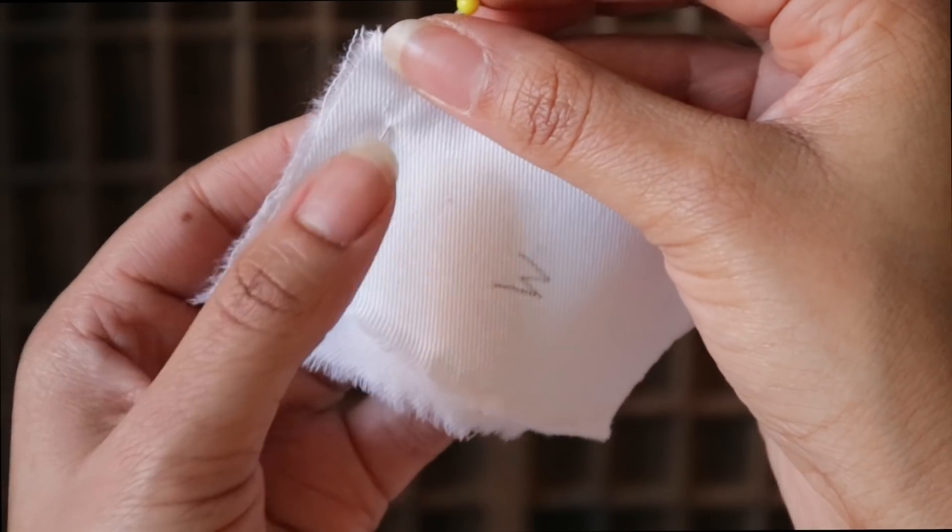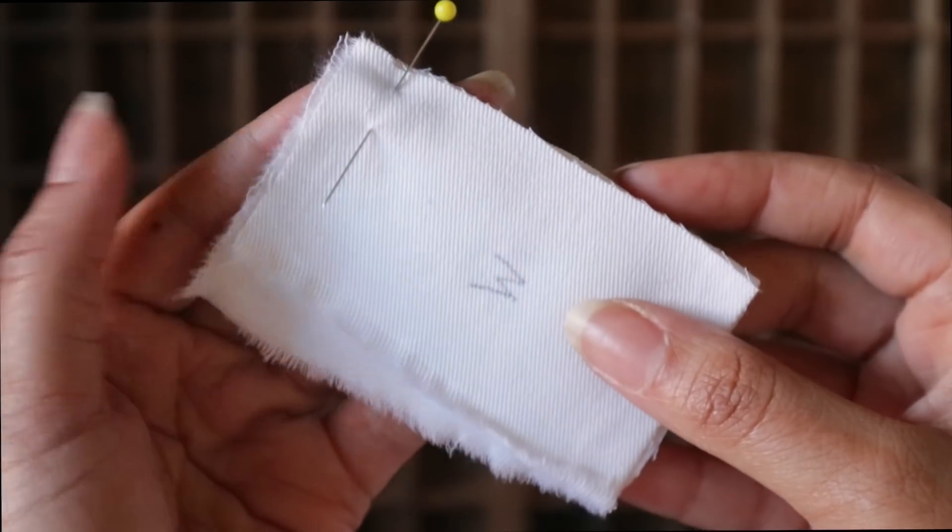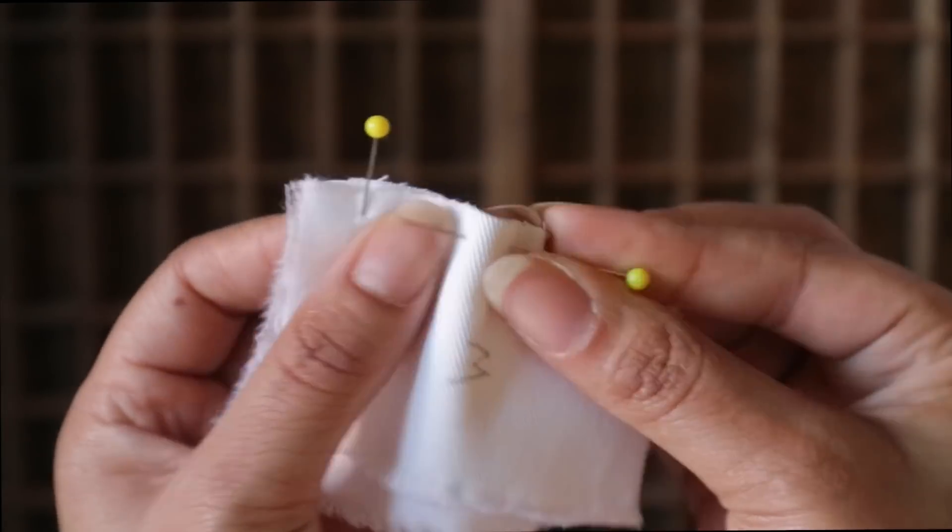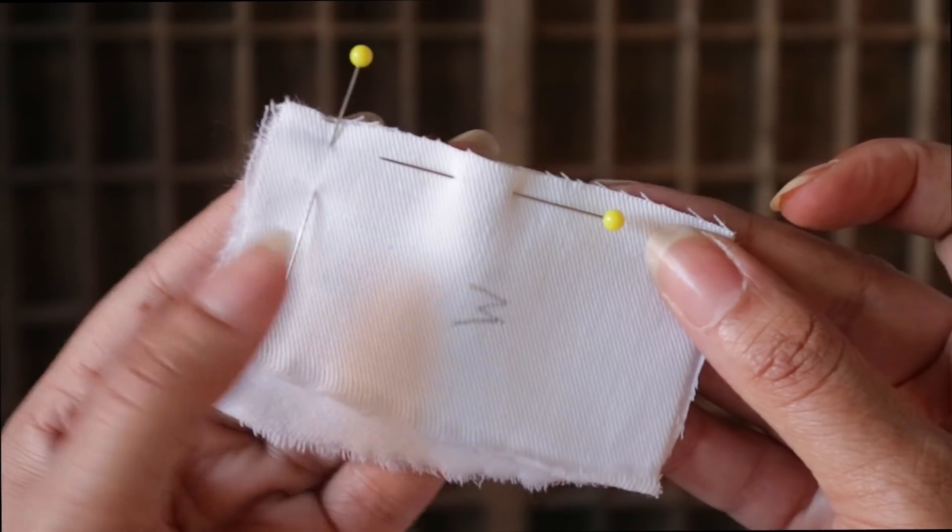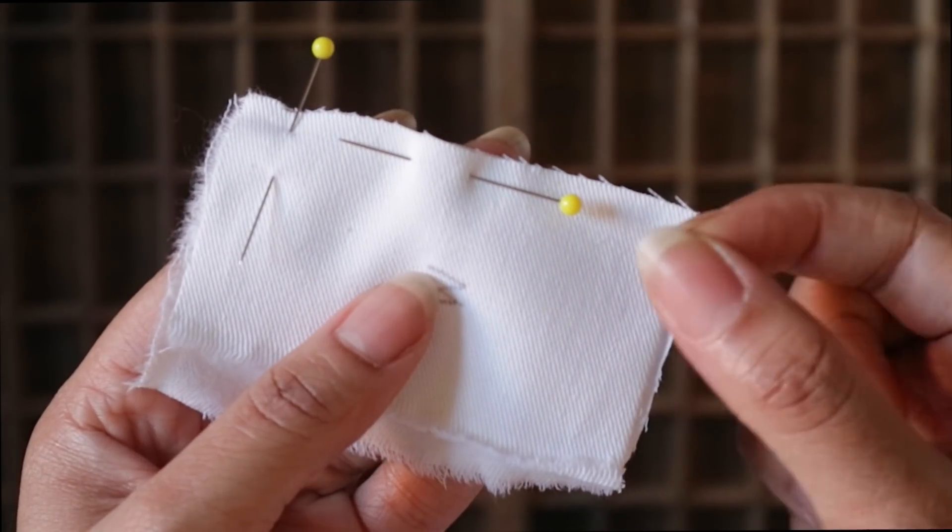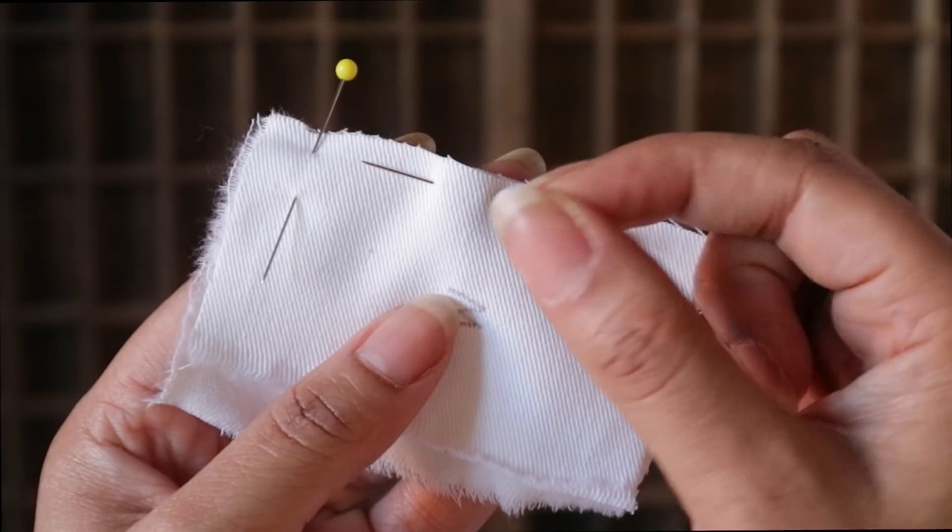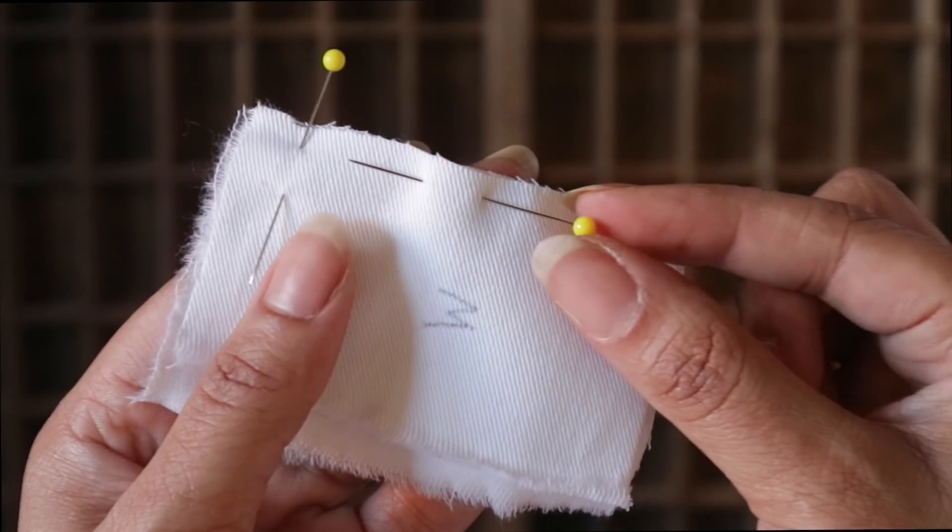You want to place them perpendicular to your seam like this, and not parallel to the edge of your fabric like this, because this is the same direction that you'll be working, so it'll just get in the way. And if you're sewing on a sewing machine, then this can be dangerous because you might break your needle.